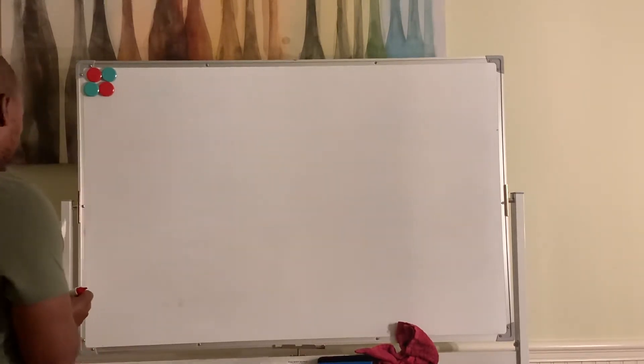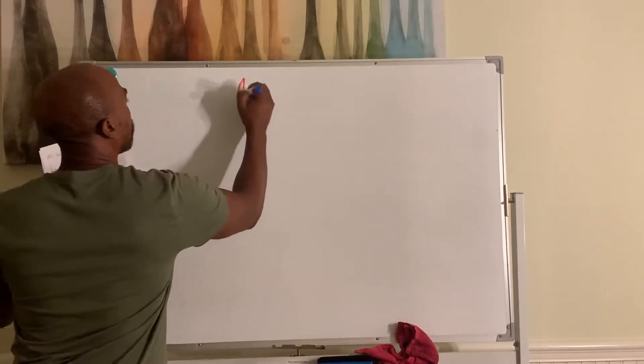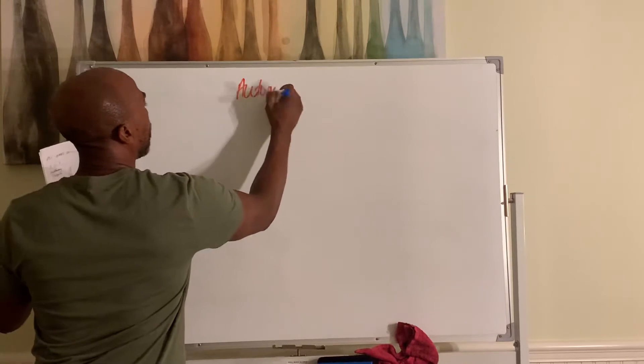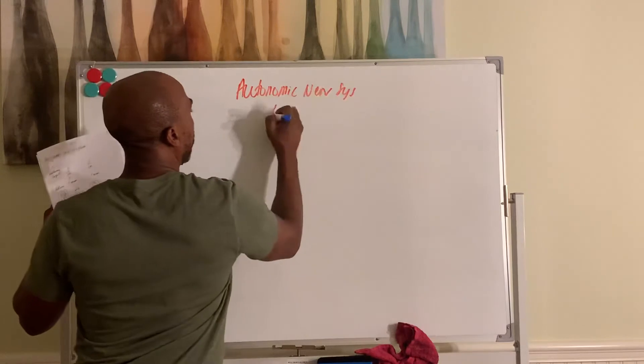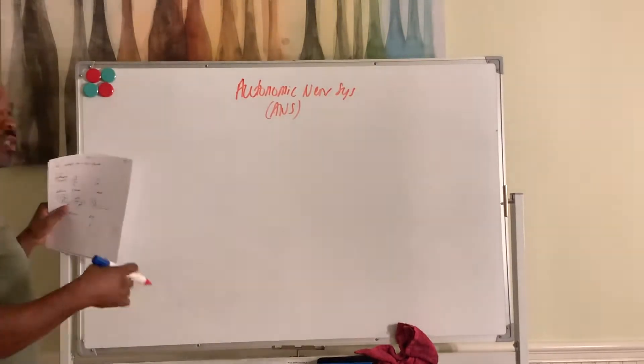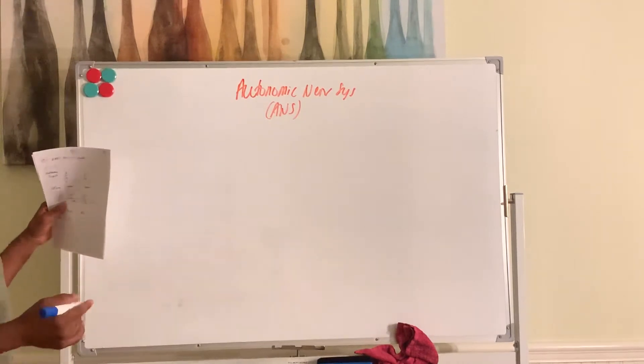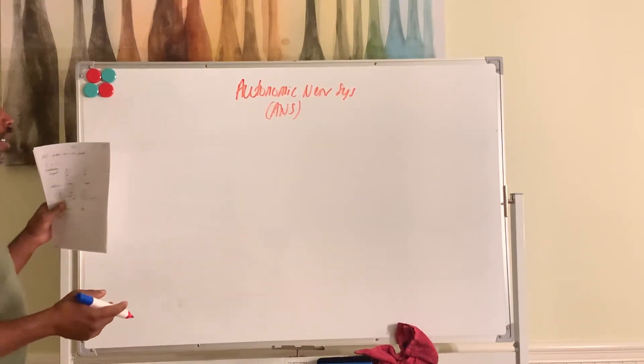Okay, let's discuss the ANS. So the ANS, which is the autonomic nervous system, is what controls our internal organs, blood vessels, heart, lung, stomach, and bladder.